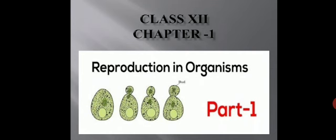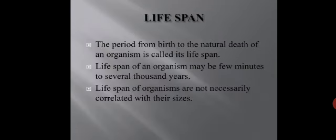Let's start with our first topic: lifespan. Each and every organism can live only for a certain period of time. This period of time from their birth to their natural death is known as their lifespan. The lifespan of an organism may be of a few minutes or of several thousand years, so different organisms have different lifespans. You can understand this better by observing this slide, which shows the lifespan of some organisms. In the case of the fruit fly, the lifespan is 1 day.